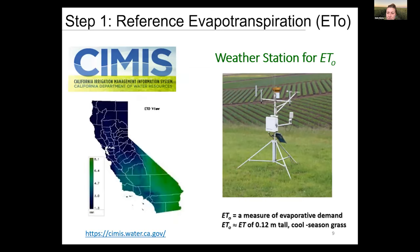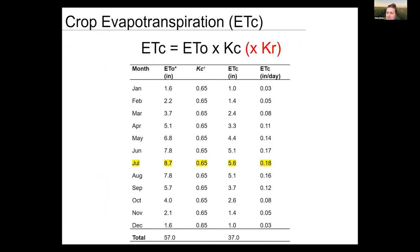Reference evapotranspiration is easy to obtain because it's provided by public services. In California, that's the CIMIS network. You go online, sign into CIMIS, and find the meteorological station closest to your orchard. These stations are placed throughout California and measure how much water is evapotranspired by a grass surface, like the one in the picture. This data is easily available online — you can get monthly or weekly data, depending on your irrigation scheduling. The crop coefficient is developed by researchers.